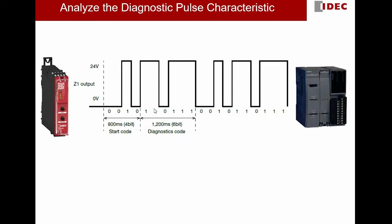This diagram shows one example of the diagnostic pulse coming out from HR6S safety relay. A full cycle of the diagnostic pulse actually consists of 10 bits, with the first 4 bits being a start code, whereas the subsequent 6 bits are a diagnostic code. This forms one complete cycle of the diagnostic pulse, and this pulse has a frequency of 5 Hz.